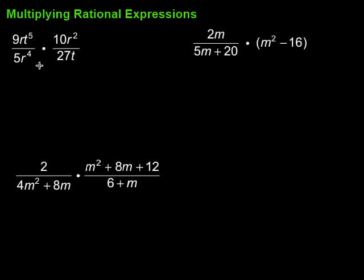I could simplify to start with, and I see a 5 and a 10. That 5 becomes a 1, the 10 becomes a 2. Then that 9 and 27, this becomes a 1, 27 becomes a 3. We're dividing top and bottom by 9, dividing top and bottom by 5.